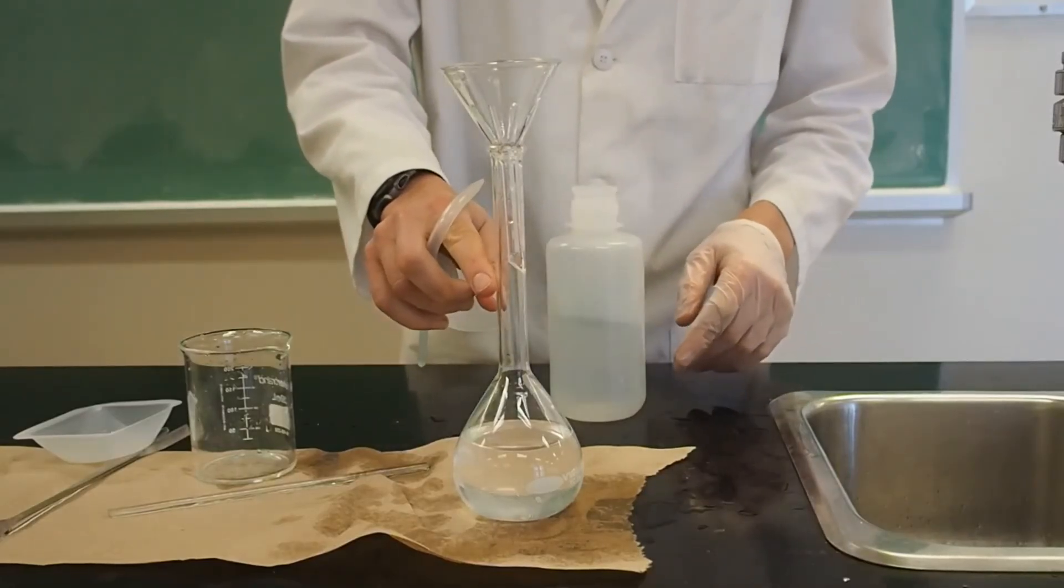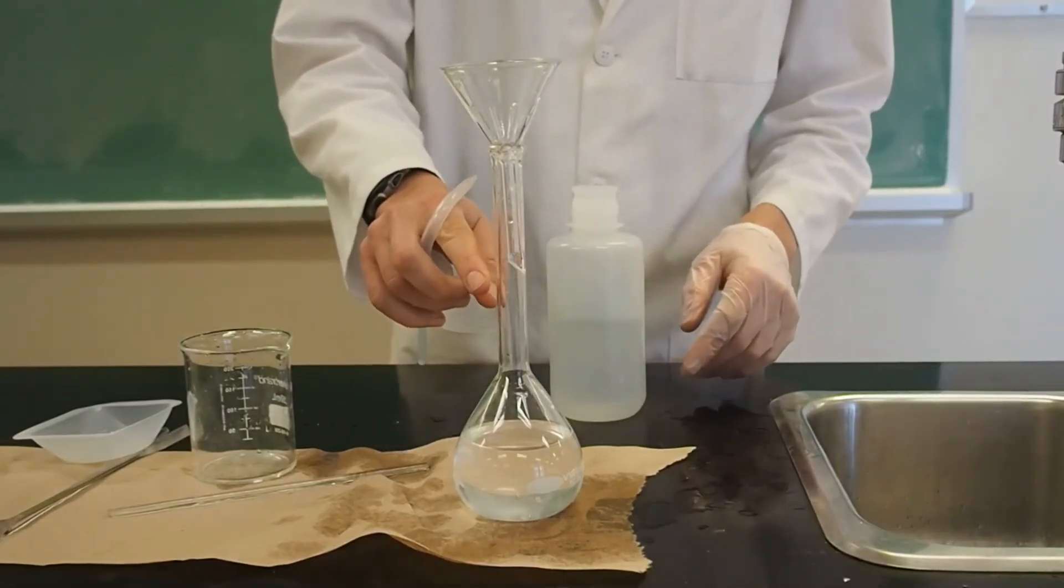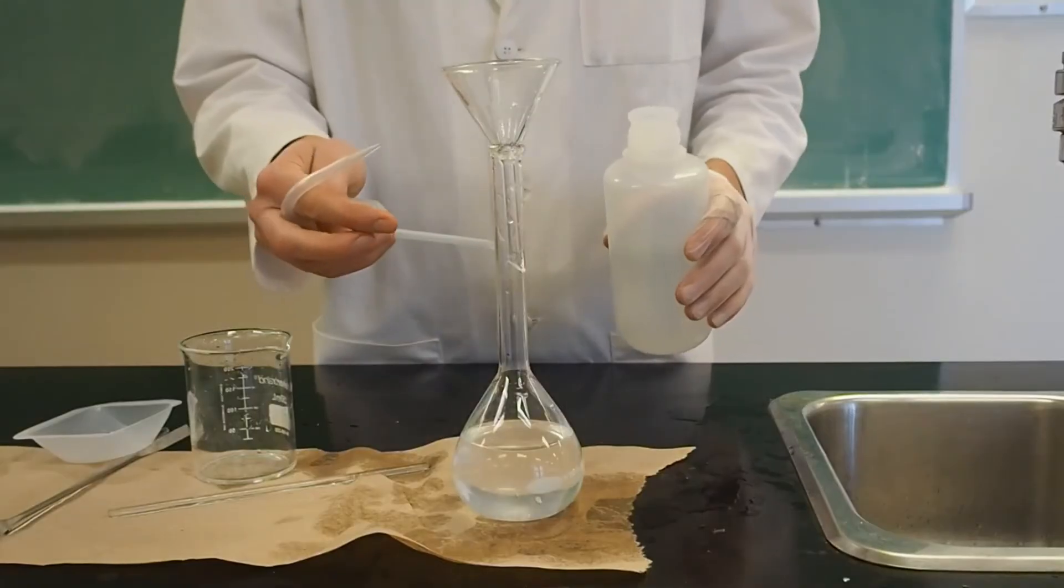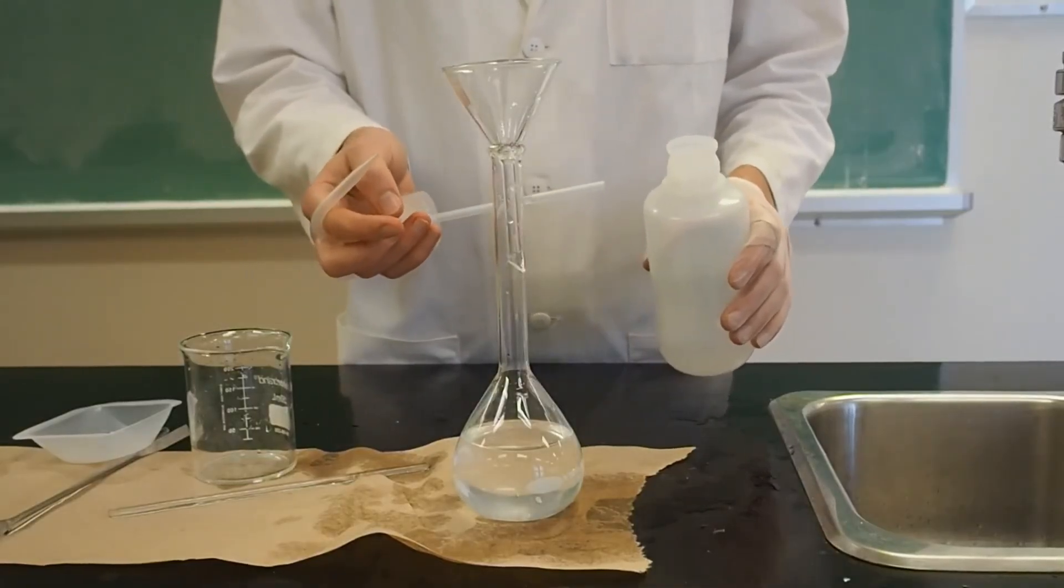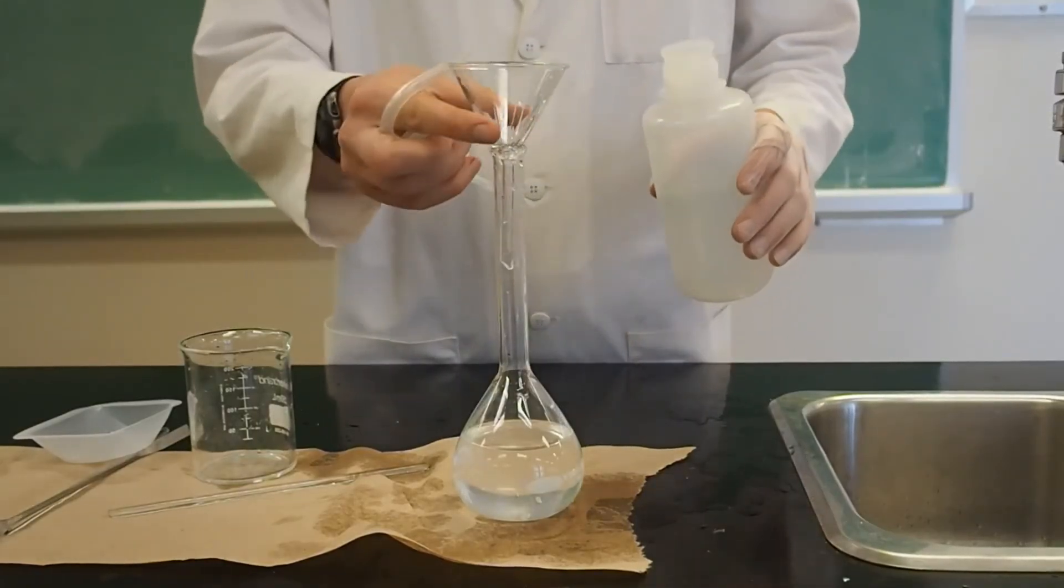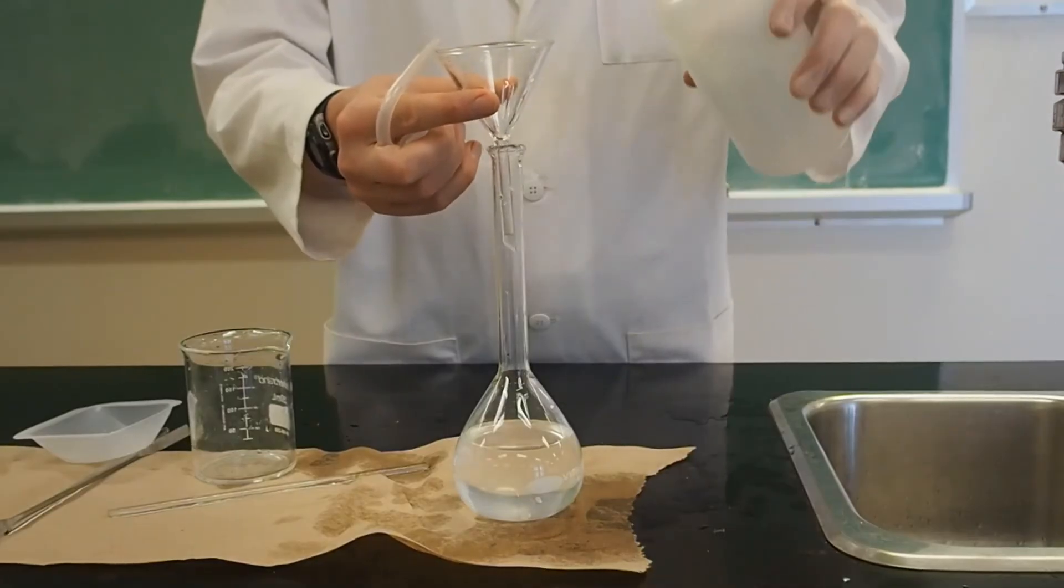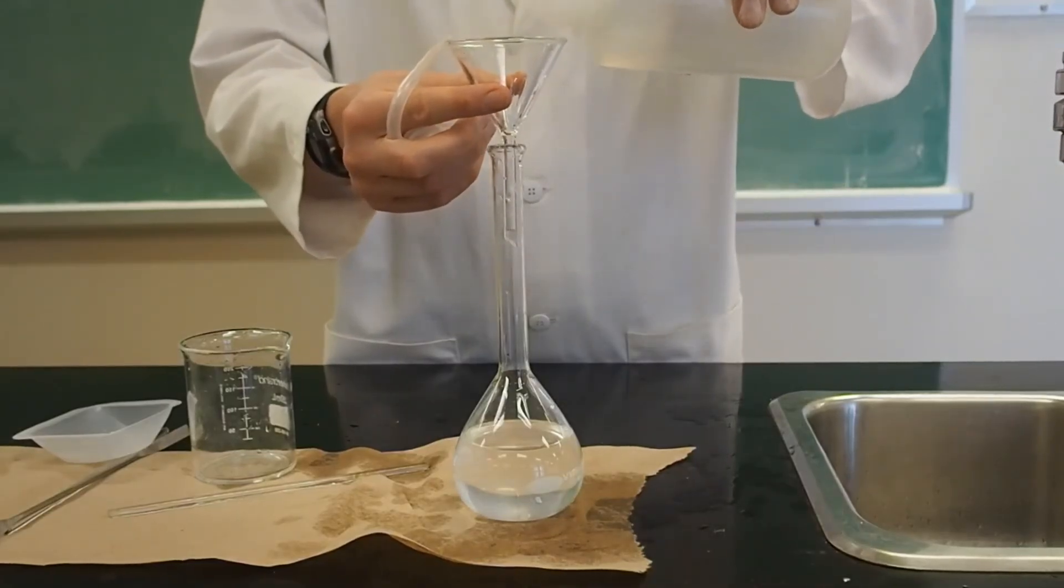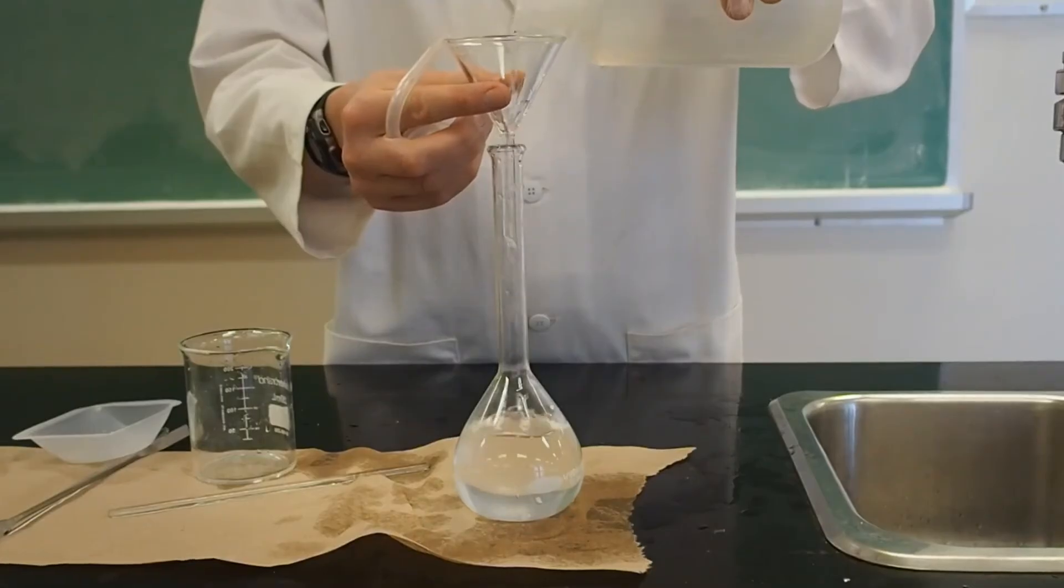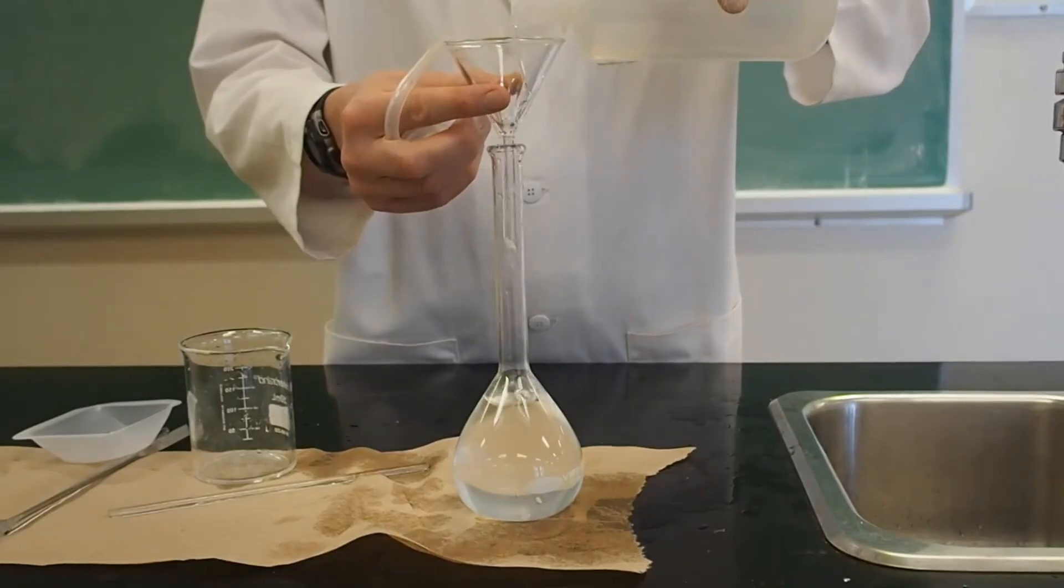While lifting the funnel to avoid a seal, add deionized water. While filling the bulb, you can add fairly quickly, but slow down when you get to the neck of the volumetric flask. It fills very fast, especially with a smaller volumetric flask, so you need to go very slowly.